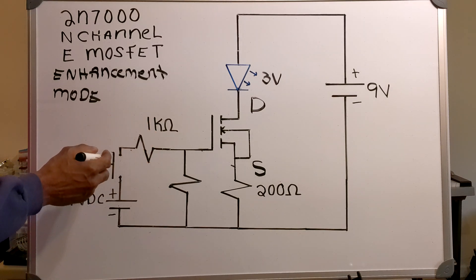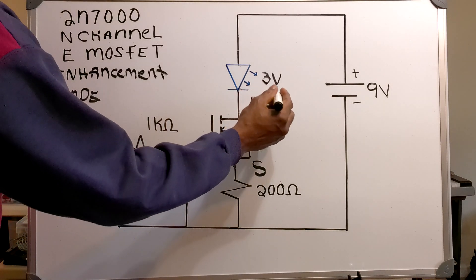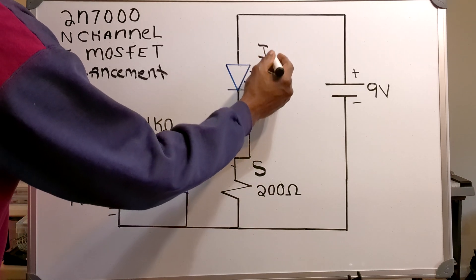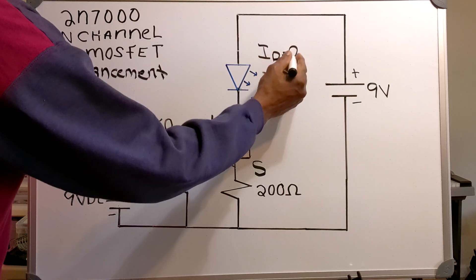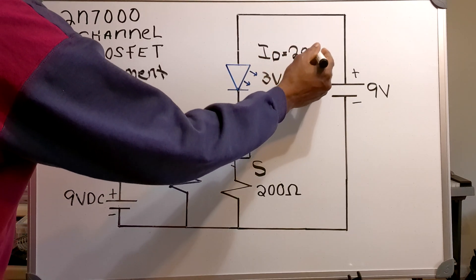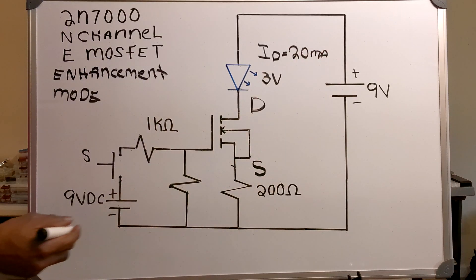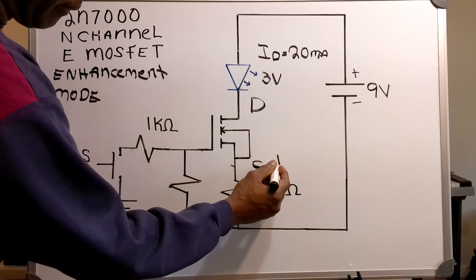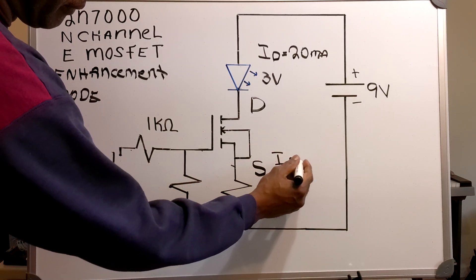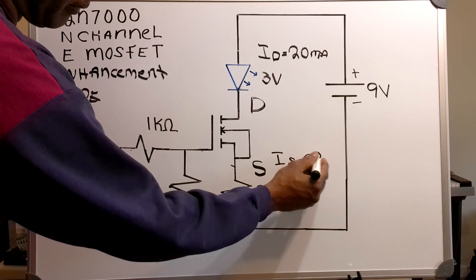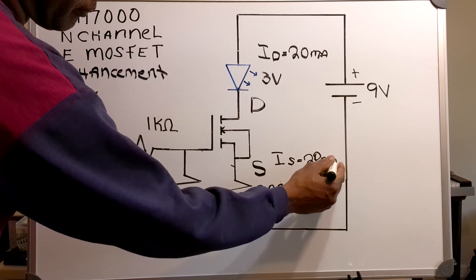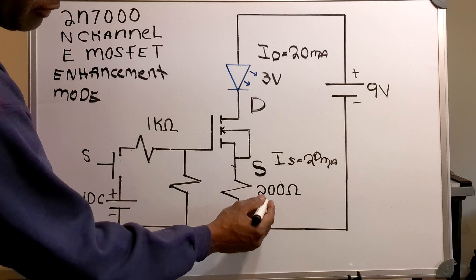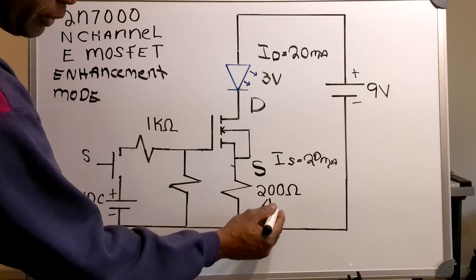Now, after I close the switch, I'm going to want a drain current of 20 milliamps. And the source current would also be 20 milliamps. And that means I'm going to need a voltage across my 200 ohm resistor of 4 volts.